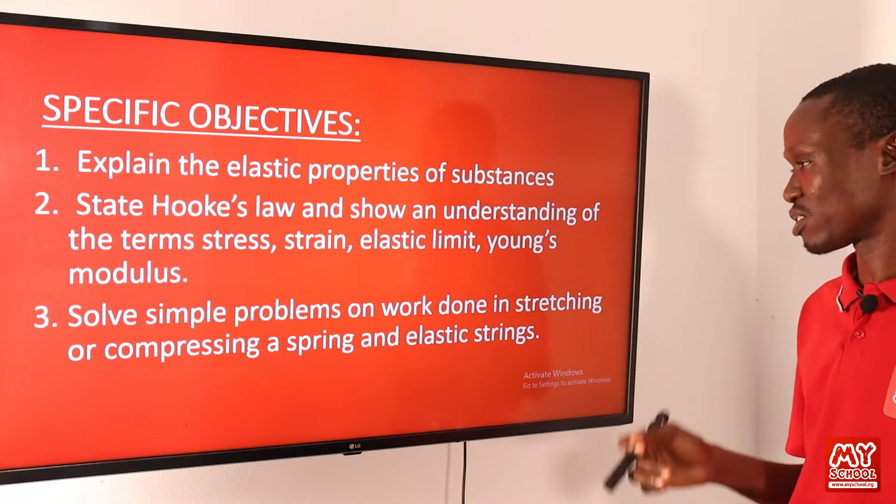The limit of proportionality is the point on the curve where the stress-strain graph begins to deviate from a straight line. The elastic limit is the point up to which the material can be stretched elastically without causing permanent deformation. Beyond the elastic limit is the yield point, where the elastic material has yielded all its elasticity permanently and has become plastic. The last point is the breaking point, which is where the material breaks after undergoing plastic deformation — it indicates the maximum stress the material can withstand before breaking.